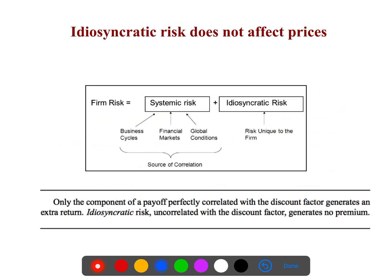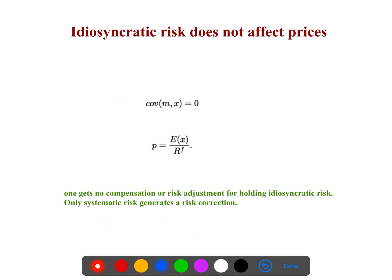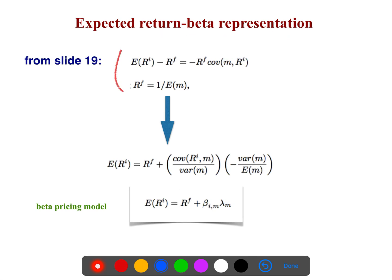Idiosyncratic risk or non-systematic risk does not play a role. Only the component of payoff perfectly correlated with discount factor generates an expected return. Idiosyncratic risk or unsystematic risk, because it is uncorrelated, there is no correlation between that and the discount factor. That's why we have no risk correction. Idiosyncratic risk does not affect prices. That's why our covariance is zero in the case of non-systematic risk. For example, the CEO changes and it affects the profit - this is the non-systematic. It doesn't care how the market is going, so it doesn't affect the price.